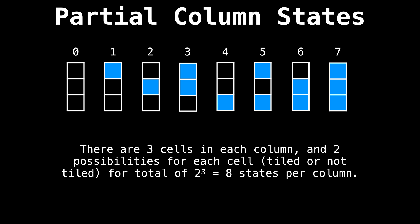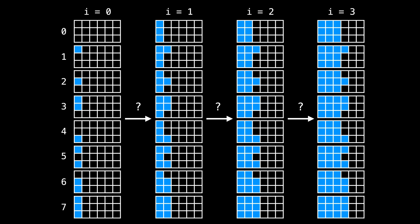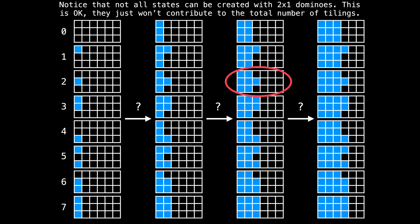On this slide are all partially filled states for the column at index three. The important thing to remark is that all columns before index three are currently filled. If we inspect each column, you will see that there are three cells per column and two possibilities for each cell — tiled or not tiled — for a total of eight states per column. I'm going to assign a number to each of the possible states using the base two binary representation. So state zero is the empty state, state one has one tiled block on the top row, state two has one tiled block in the middle row, and so on. States that cannot be tiled simply won't contribute to the total number of tilings. For example, the state circled in red cannot actually be tiled, but we track its existence nonetheless.